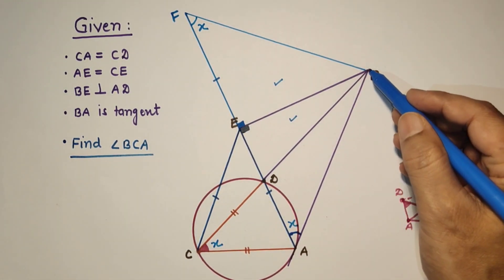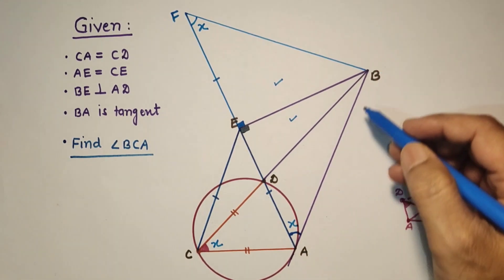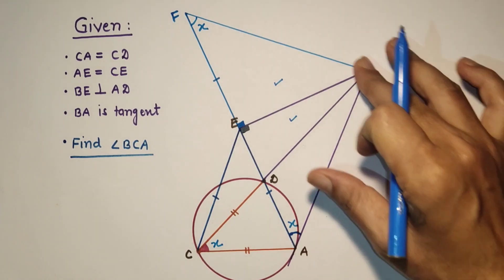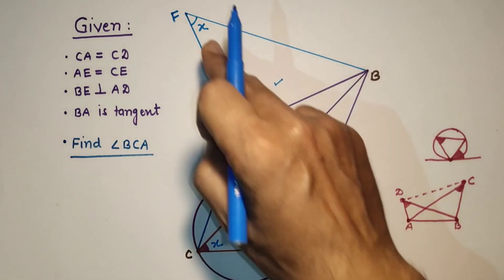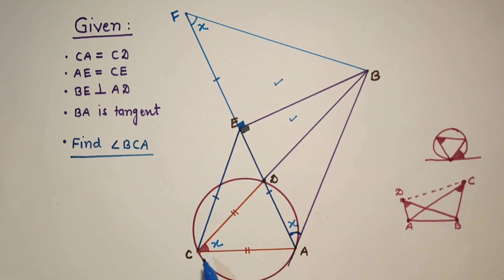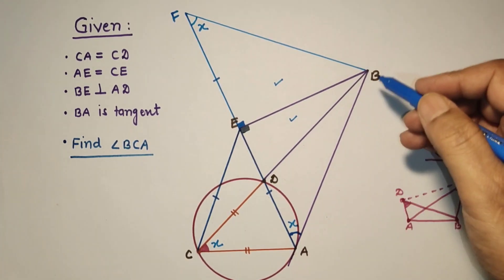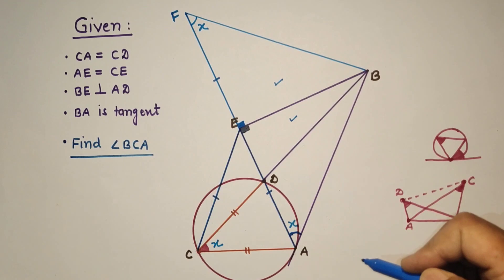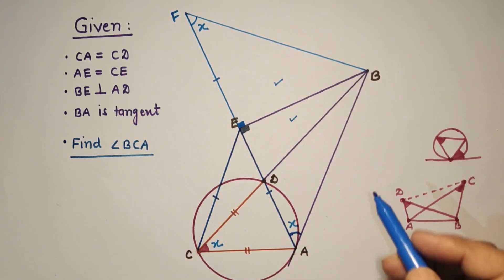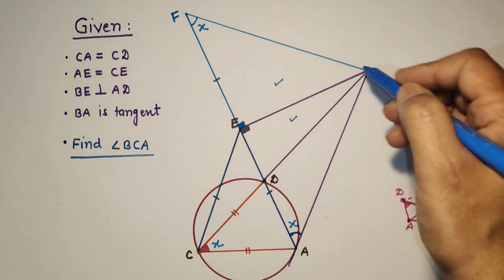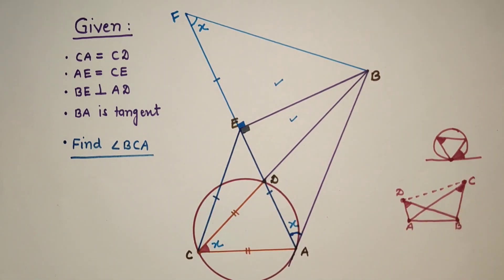Now look at line segment BA. BA subtends angle X at point F and also angle X at point C. So angle BFA equals X and angle BCA equals X. Since BA is the same line segment and both angles BFA and BCA are equal, we can say that B, F, C, and A are concyclic points — that is, BFCA is a cyclic quadrilateral.